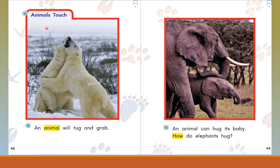Animals touch. An animal will tug and grab. An animal can hug its baby. How do elephants hug? Look carefully, boys and girls. Look at the picture. How is this elephant hugging her baby? Notice how the baby is between her two legs.